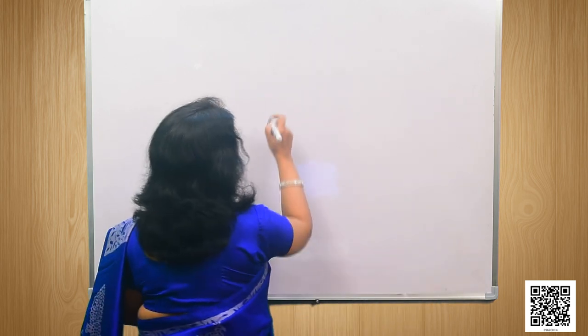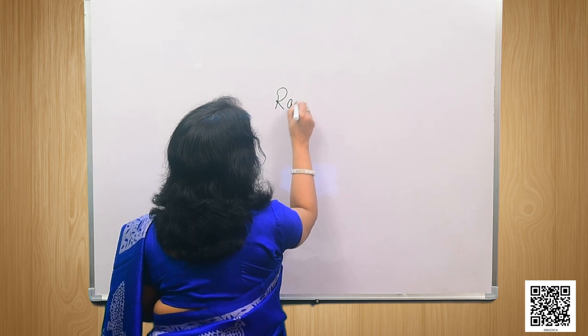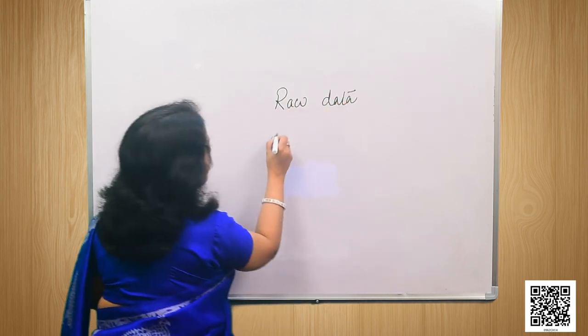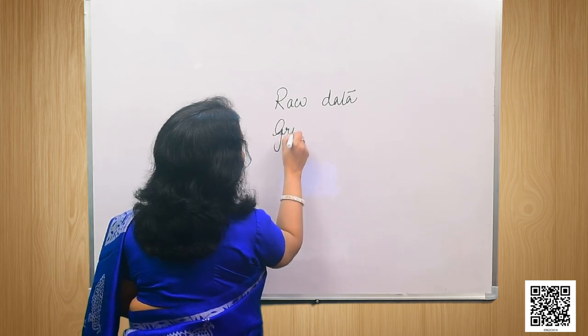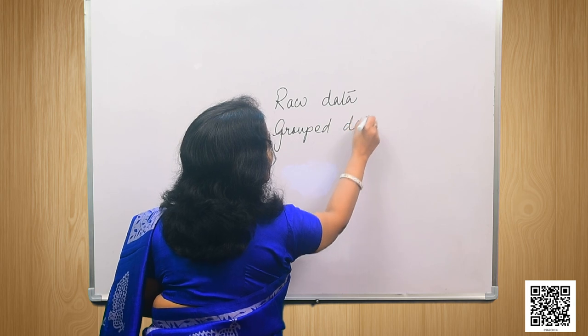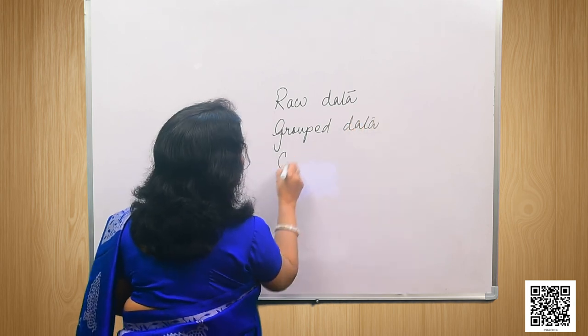In statistics, data for presentation is categorized into three types: raw data, grouped data, and classified data.